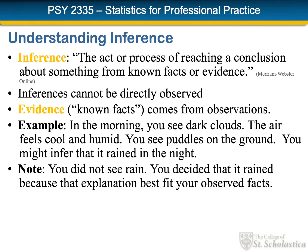For example, when you look outside in the morning and see dark clouds, if the air feels cool and humid and you're seeing puddles on the ground, you might infer that it rained in the night even though you did not see it raining. You decided that it was raining in the night because that was the explanation that was the best fit for your observed facts, and so you made an inference.